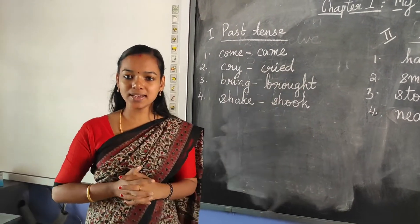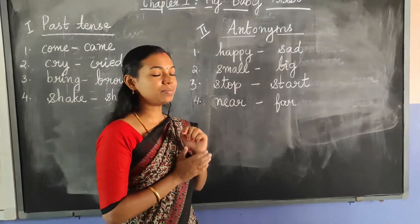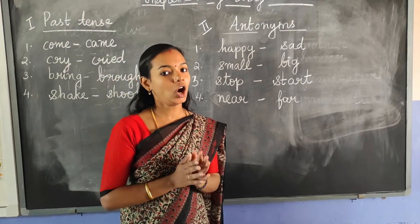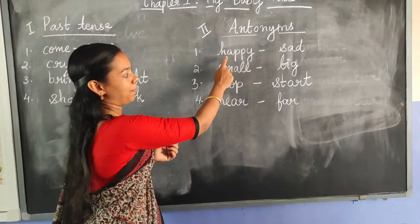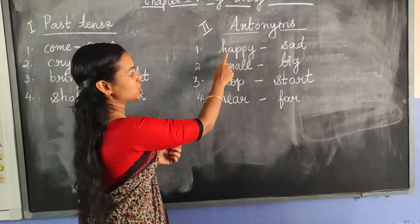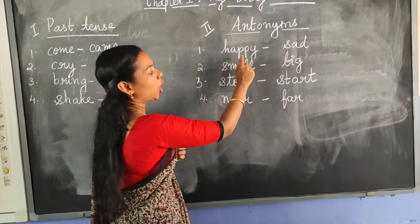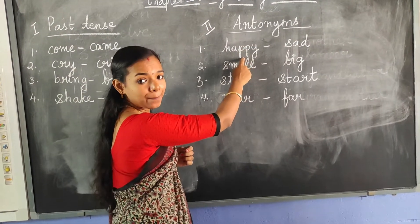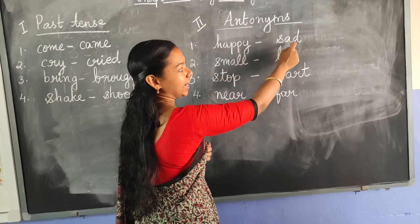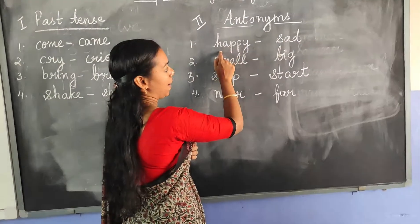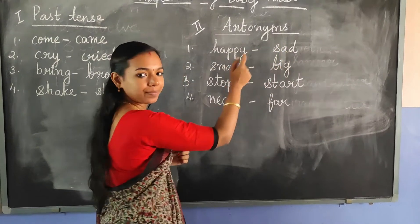All of you understood the past tense? Okay. Next is antonyms. Antonyms are opposite words. First one: happy. H-A-P-P-Y. The opposite of happy is sad. S-A-D. Happy, sad.